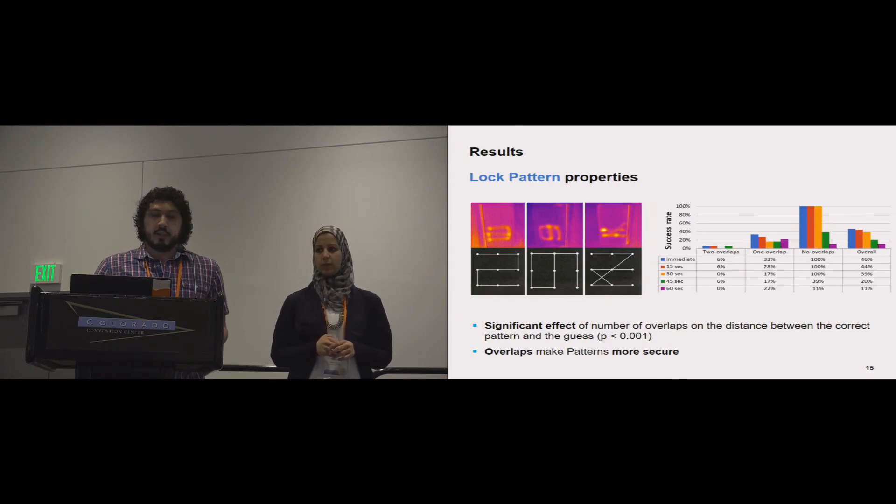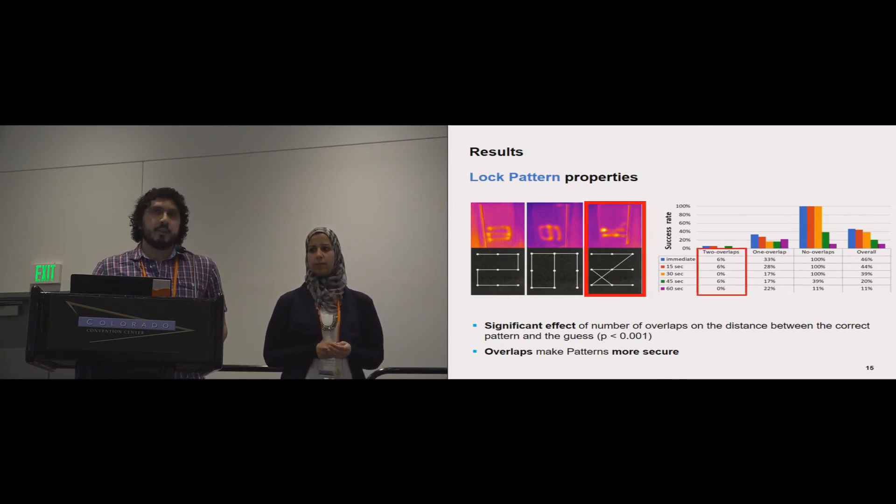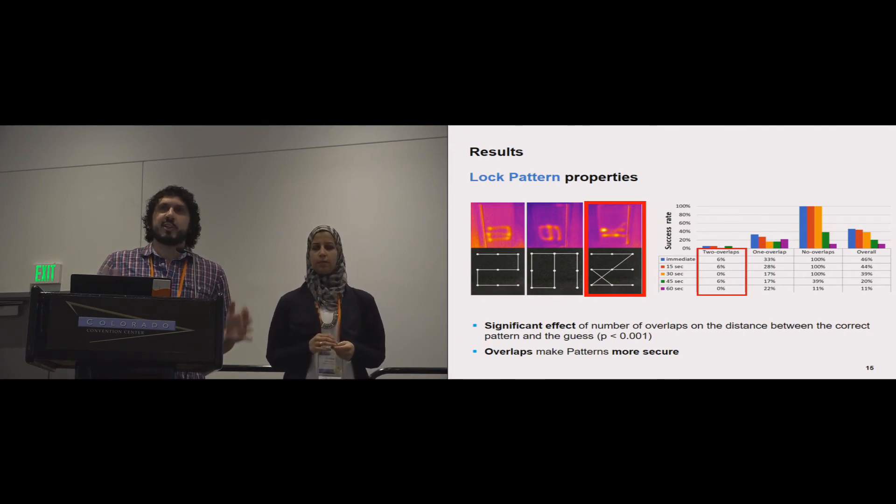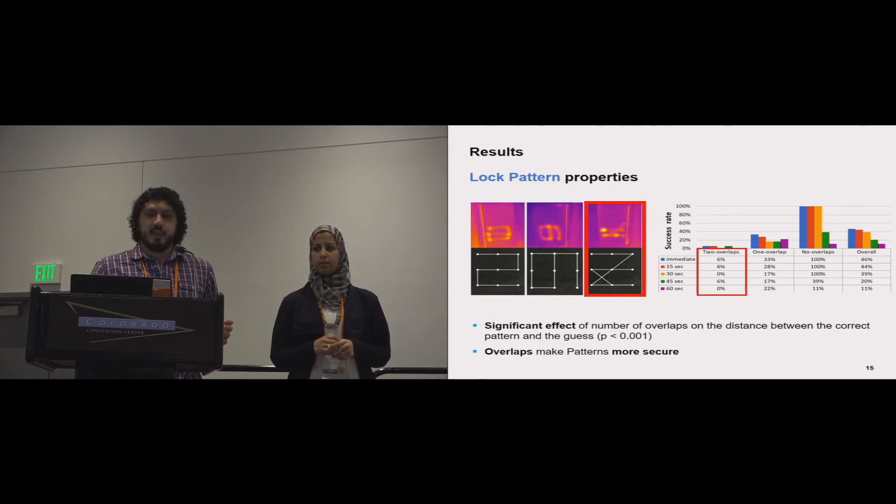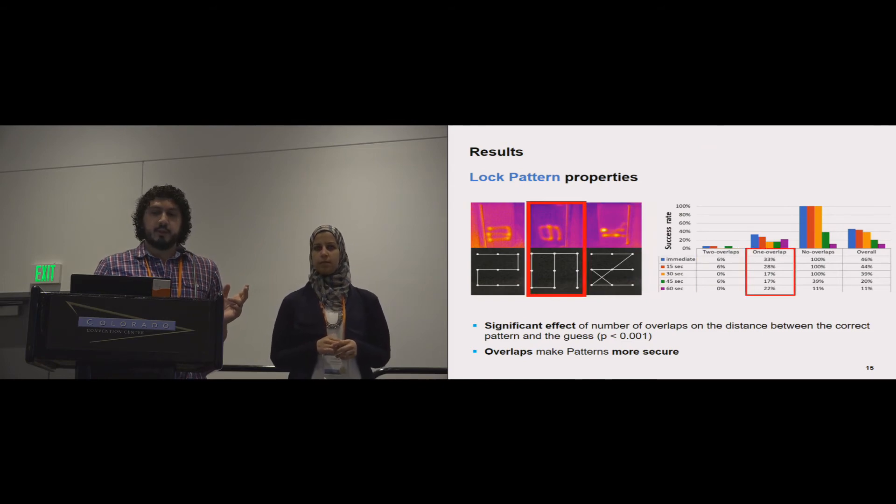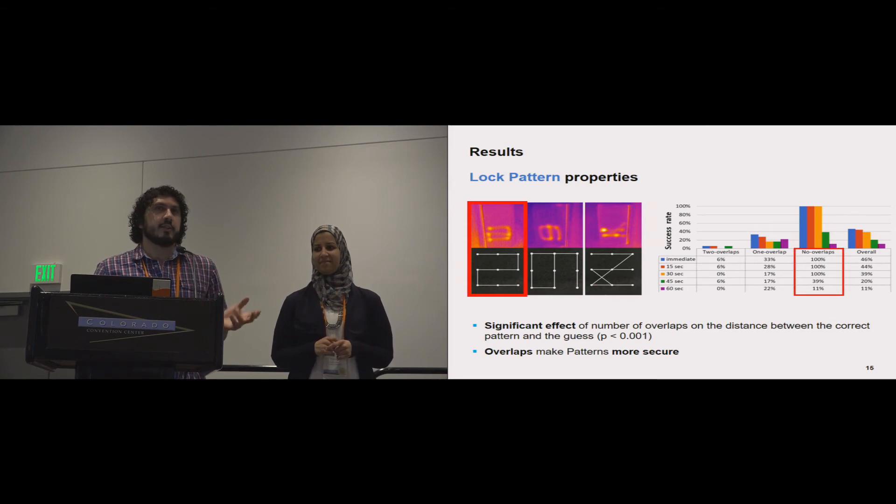As for the lock patterns, we investigated the effect of having overlaps. Actually here we found that having overlaps significantly increases the resistance to thermal attacks. If you want to protect your lock pattern from thermal attacks, you need to have one overlap at least. You can see here that the success rate is very low when you have two overlaps. It's a little bit higher if you have one overlap, and in the case of not having any overlap, it's actually pretty easy—100% of the patterns were found within 30 seconds.